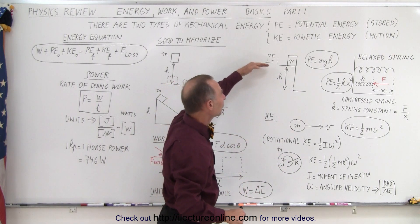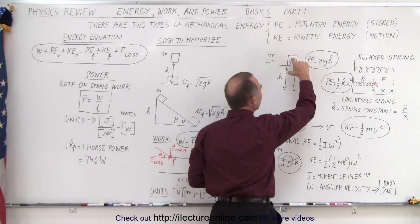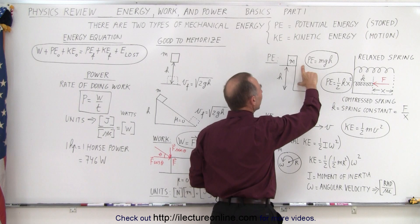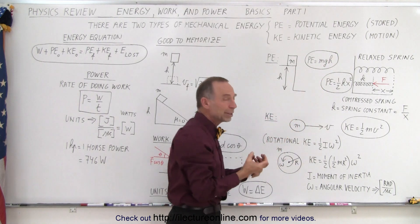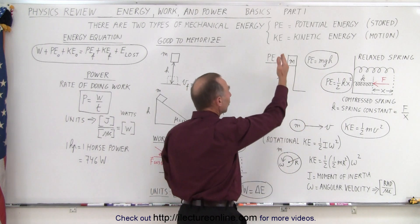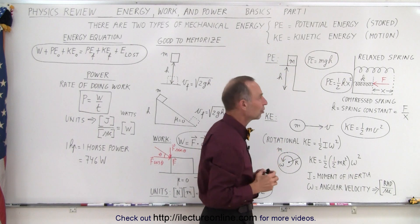And any height above the ground we call height. And therefore we can say that the potential energy of an object, which is a certain height above the ground, is equal to mg times h. Now mg would be the weight of the object, h is the height. So the weight of the object times the height is what we call the potential energy, that is stored energy.